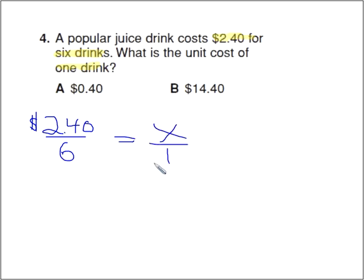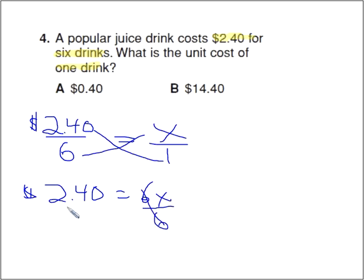So that's going to be equal to how much for 1. And our cross products always work here. So we can say $2.40 divided by 1 is 2.40 and equals, and then we have 6 times x. That's going to equal 6x. So for 6 drinks, 6 times what unit cost is going to equal $2.40? So I do the inverse of multiplying and divide each side by 6.